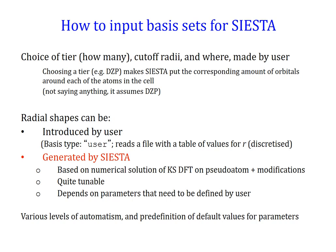For instance, when choosing DZP, it immediately understands that you want a given amount of orbitals — what is understood by DZP — in the different positions of the different atoms. And even if you don't say anything at all, it assumes a DZP. So if you want a minimal basis, then you have to say single zeta.